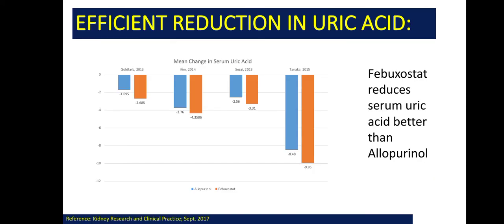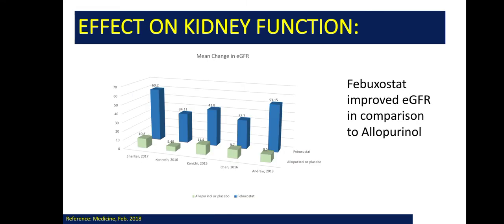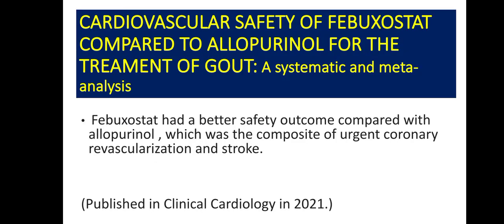Now, regarding efficient reduction in uric acid: a study published in 2017 showed that febuxostat reduces serum uric acid better than allopurinol. Another study published in 2018 showed that febuxostat improved eGFR in comparison to allopurinol. A more recent study showed that febuxostat had a better safety outcome compared with allopurinol, which was a composite of urgent coronary revascularization and stroke.